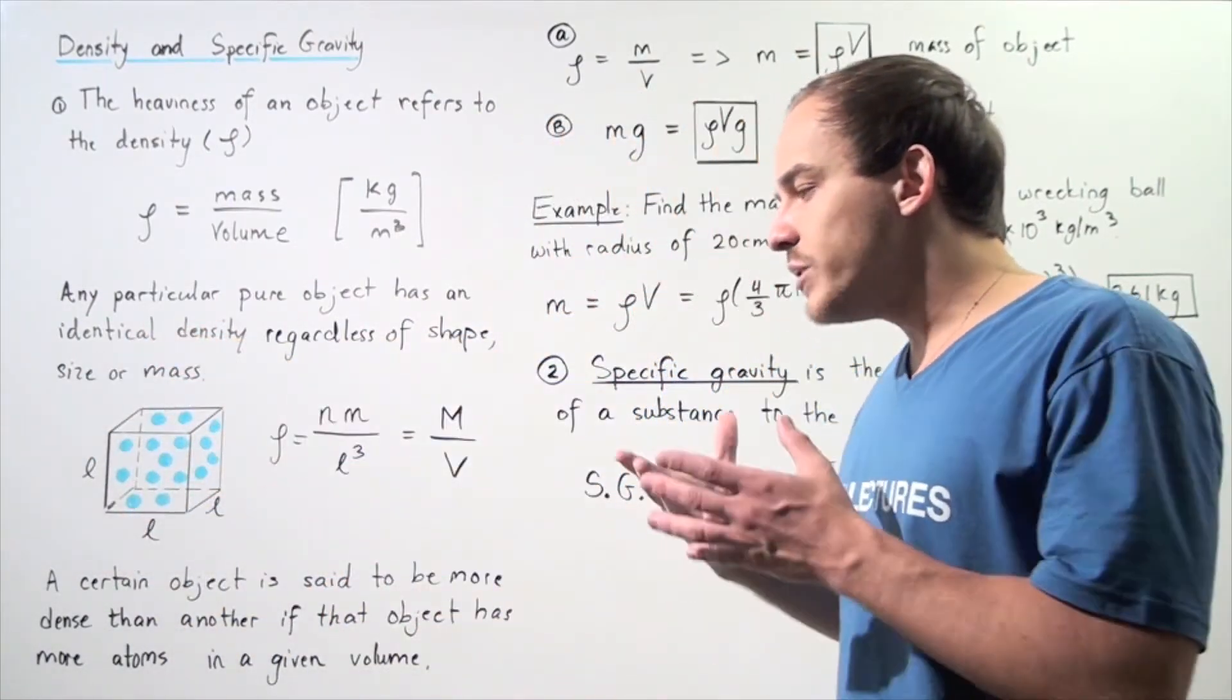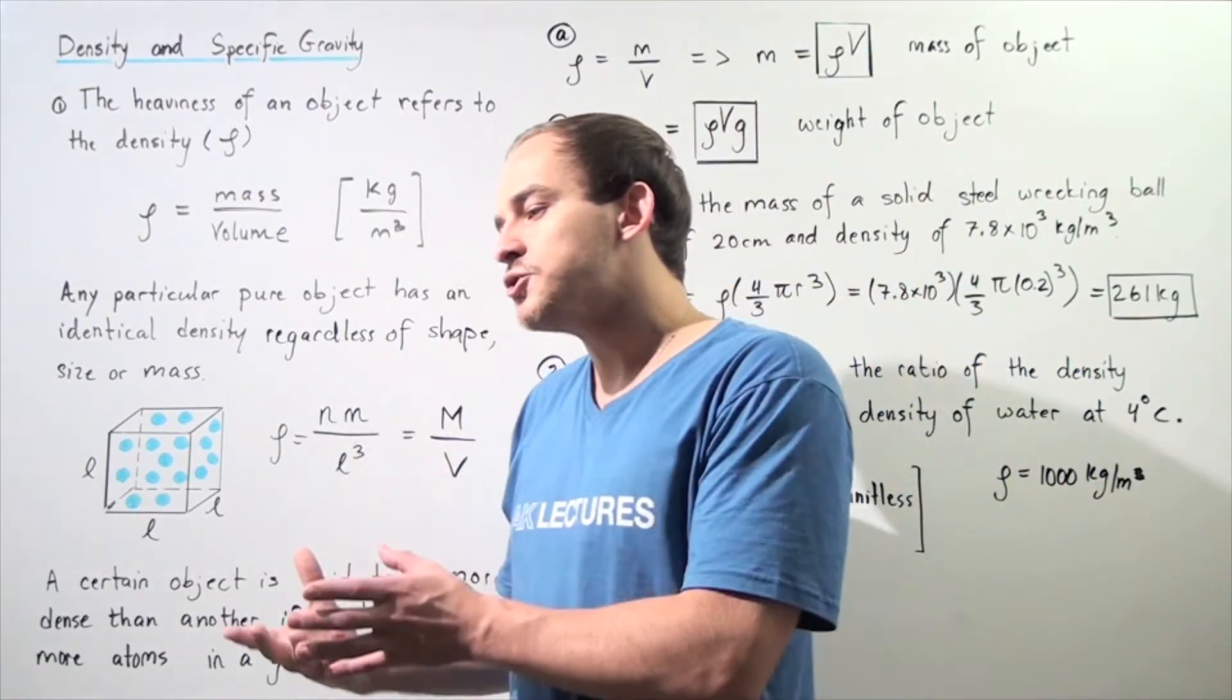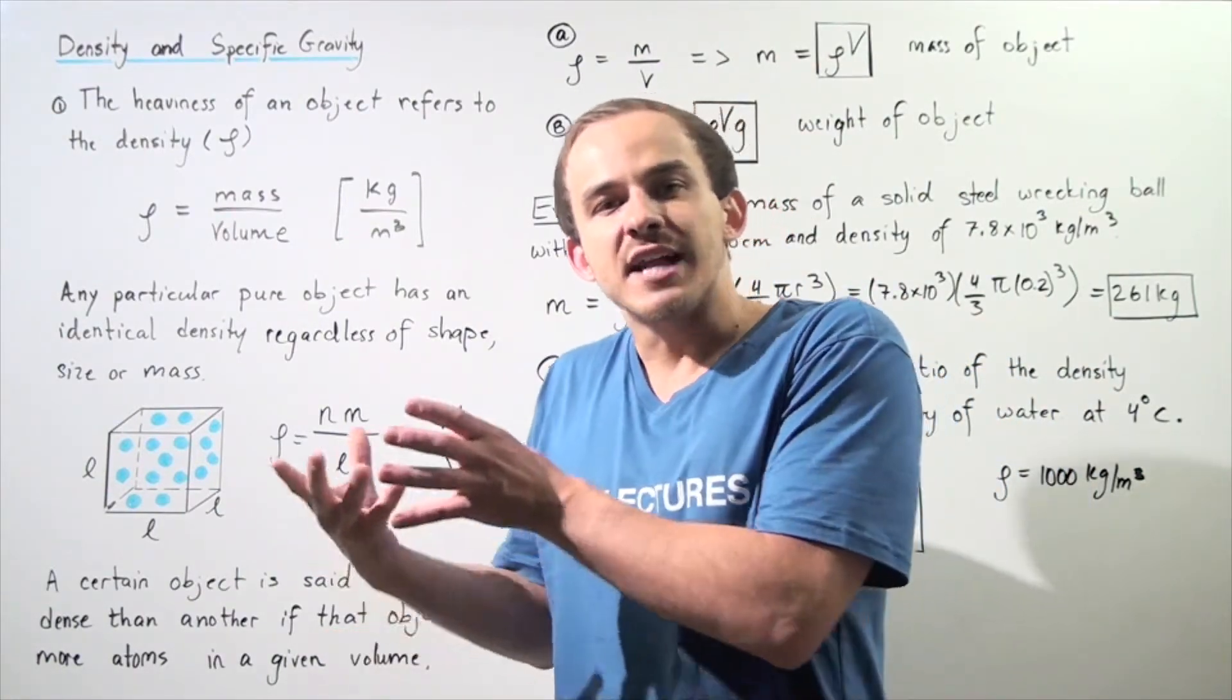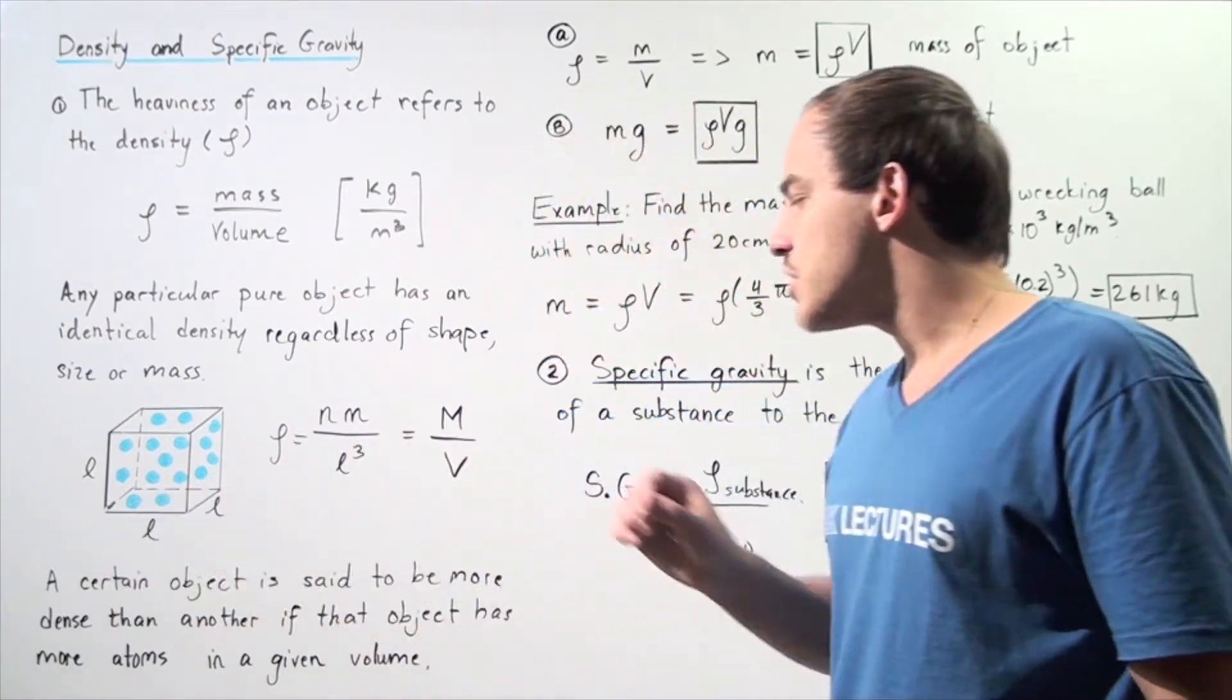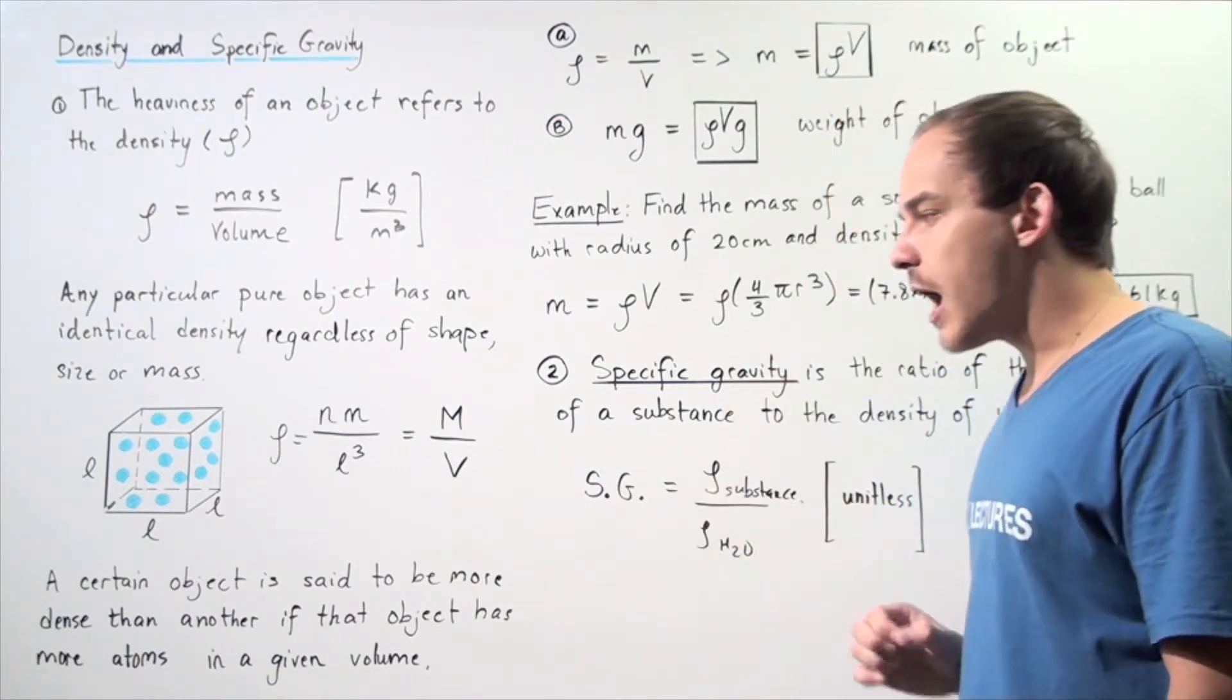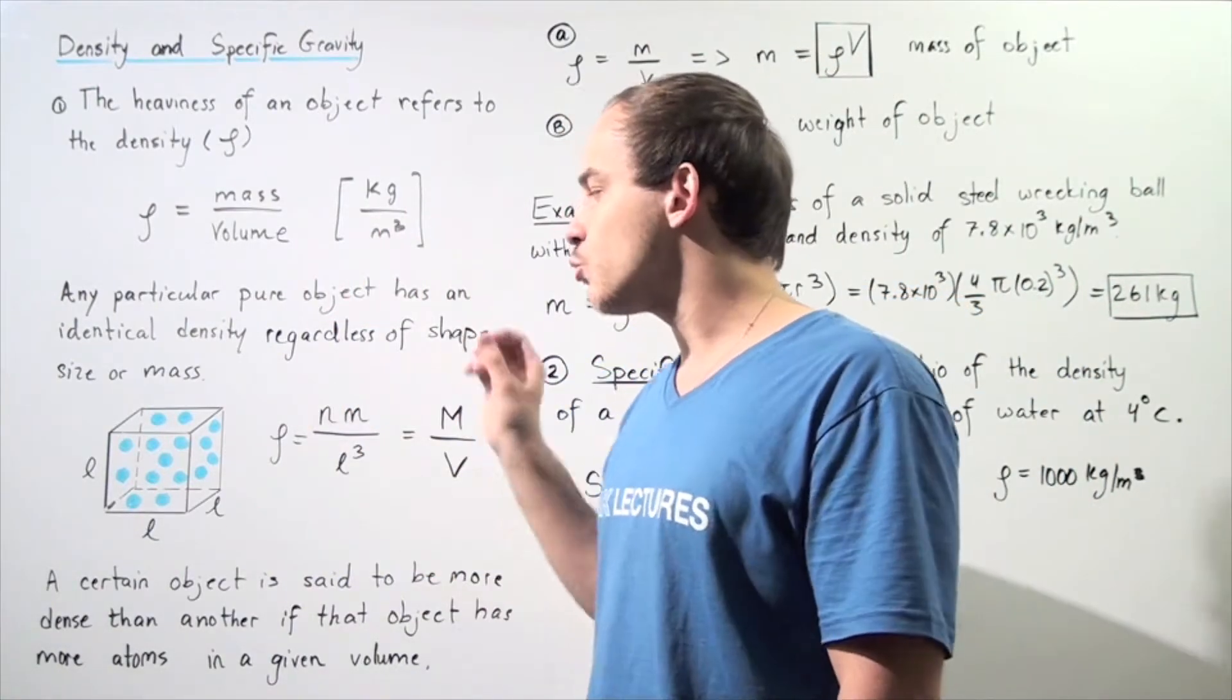So whenever we say a certain object is more dense than another object per some given volume, we're actually saying there are more atoms found in that object in that given volume. A certain object is more dense or heavier if it has more atoms in the same given volume region.